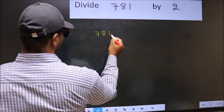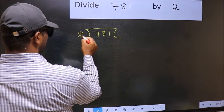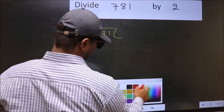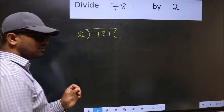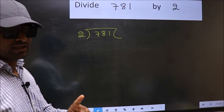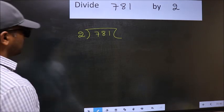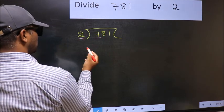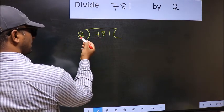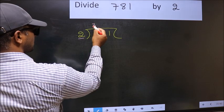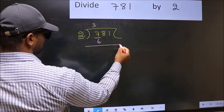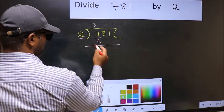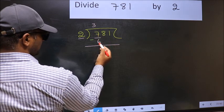781 and 2 here. This is your step 1. Next, here we have 7 and here 2. A number close to 7 in 2 table is 2 threes, 6. Now you should subtract. 7 minus 6, 1.